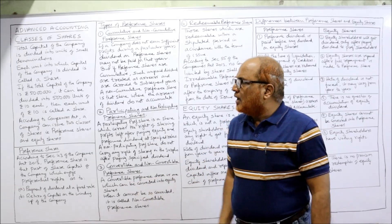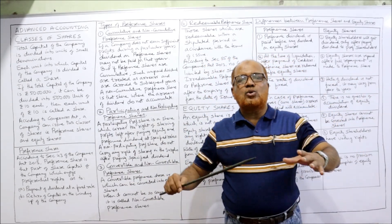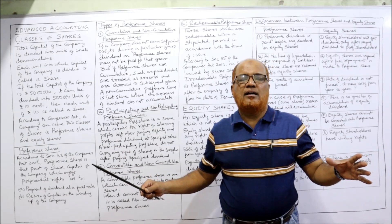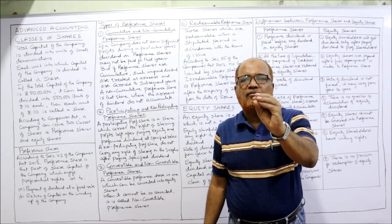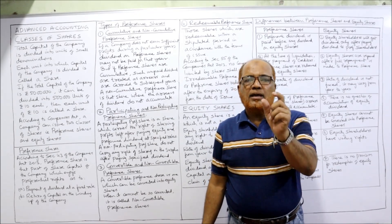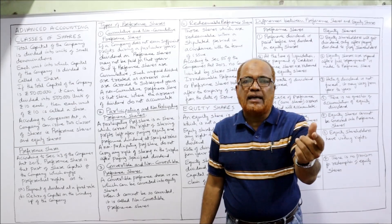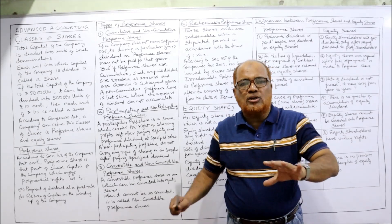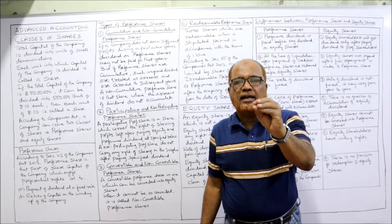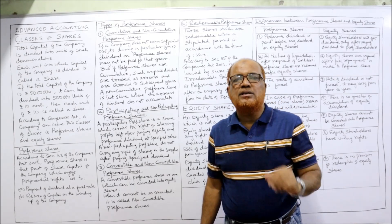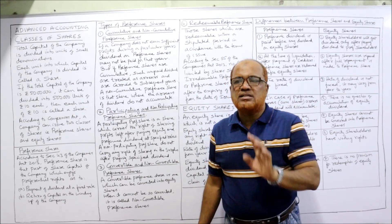Here's an example. Suppose the total capital of the company is rupees 50 lakh. We divide the 50 lakh rupees capital into 5 lakh parts or units, and each unit is of 10 rupees. So 5 lakh multiplied by 10 gives you 50 lakh rupees — that is the total capital. Each part of 10 rupees is called a share; the value of each share is 10 rupees.